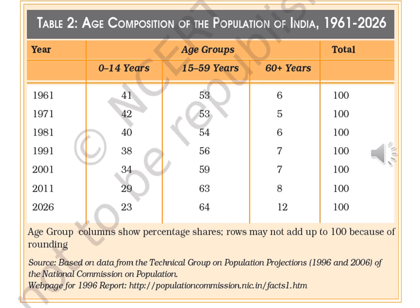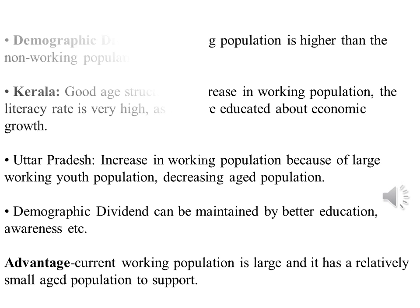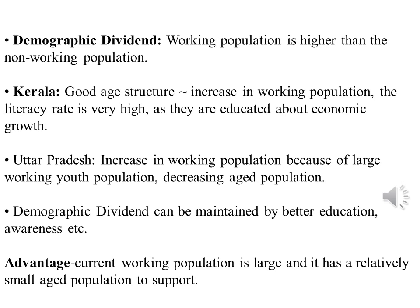In 1991 there were 36 percent of the youth, 56 percent was the working population and 7 percent was the dependent population. And in 2026, 64 percent will be the working population, dependent population will be 12 percent and youth will be 23 percent. Demographic dividend is when the working population is higher than the non-working population. The working population is the age group from 15 to 64 years, and the non-working population, also called the dependent population, is above 64 years.